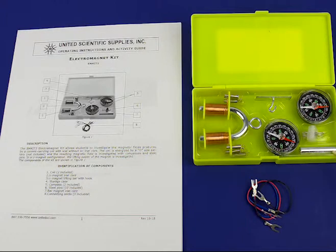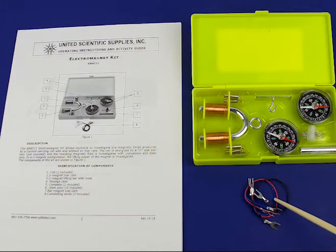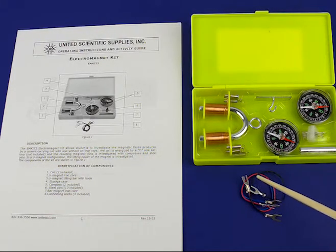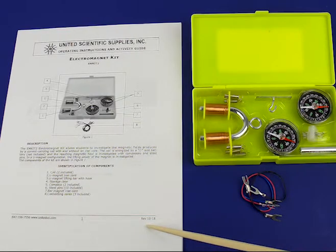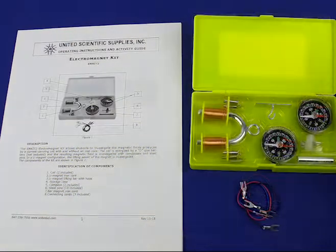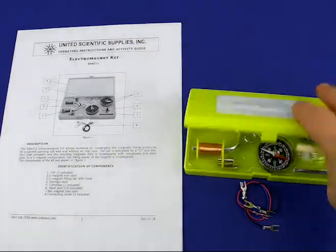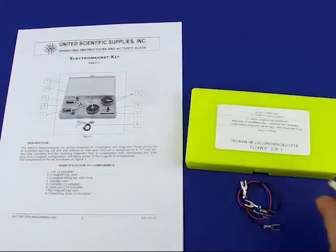a solid bar magnet core, two connecting wires, and an activity guide with several activities. The kit comes in a convenient case that you can close up and store when it is not being used.